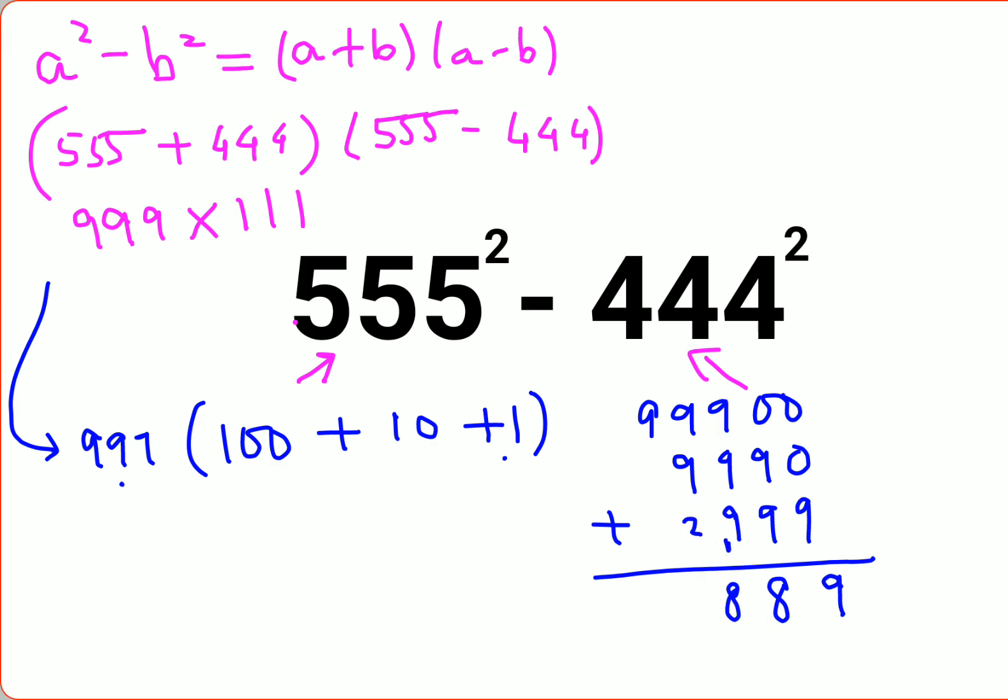Then 8 plus 2 gives you 0 with a carry of 1, and 9 plus 1 gives you 10. So the final answer is 110,889.